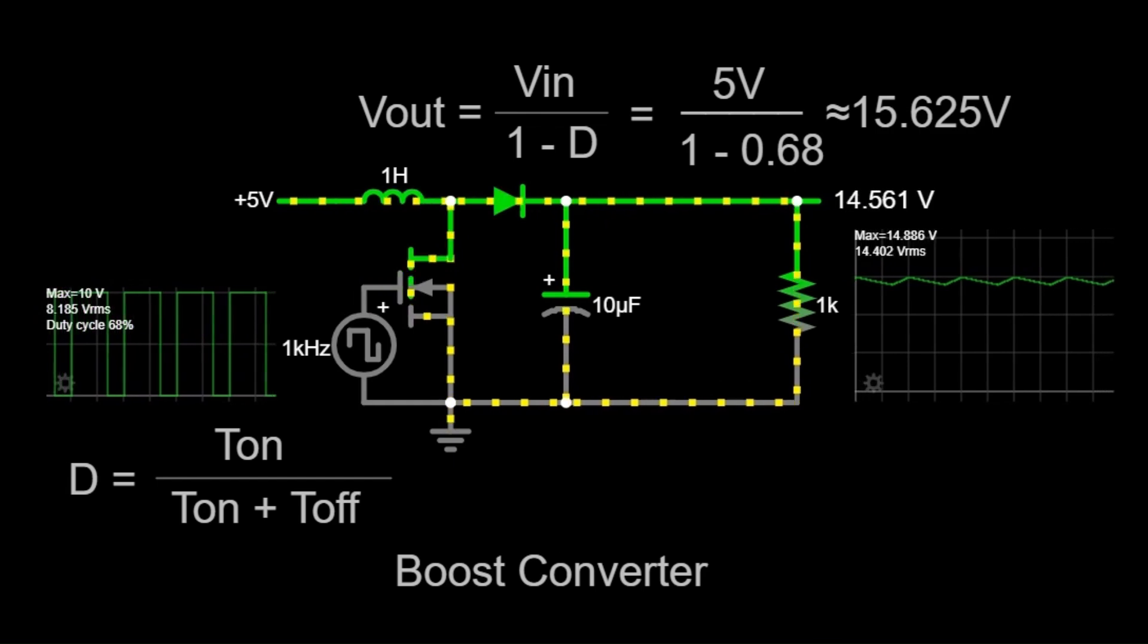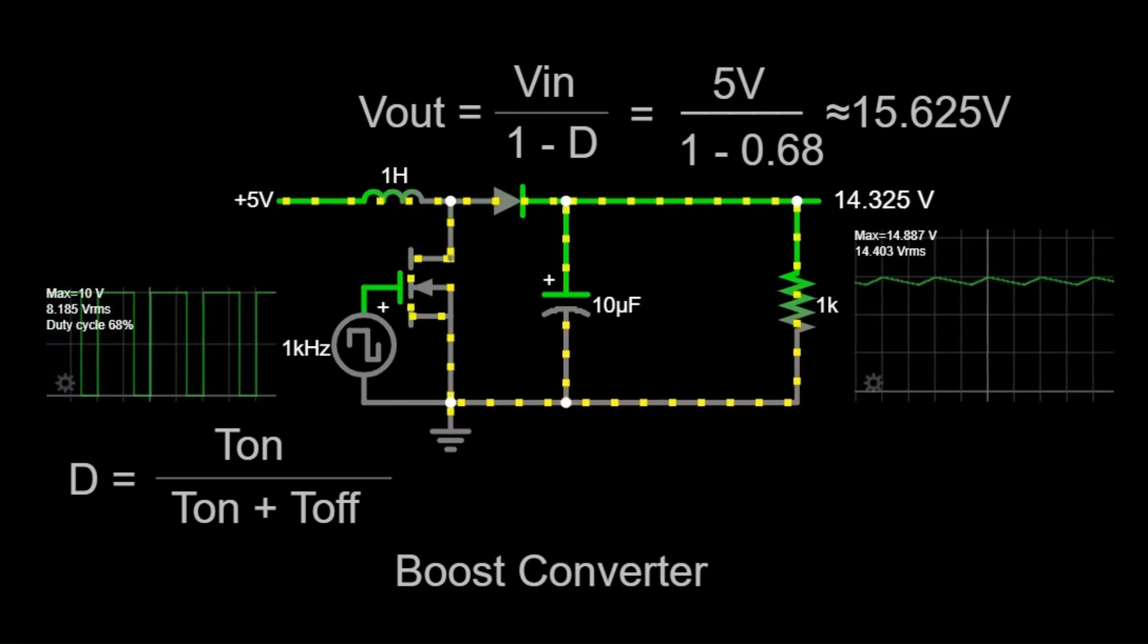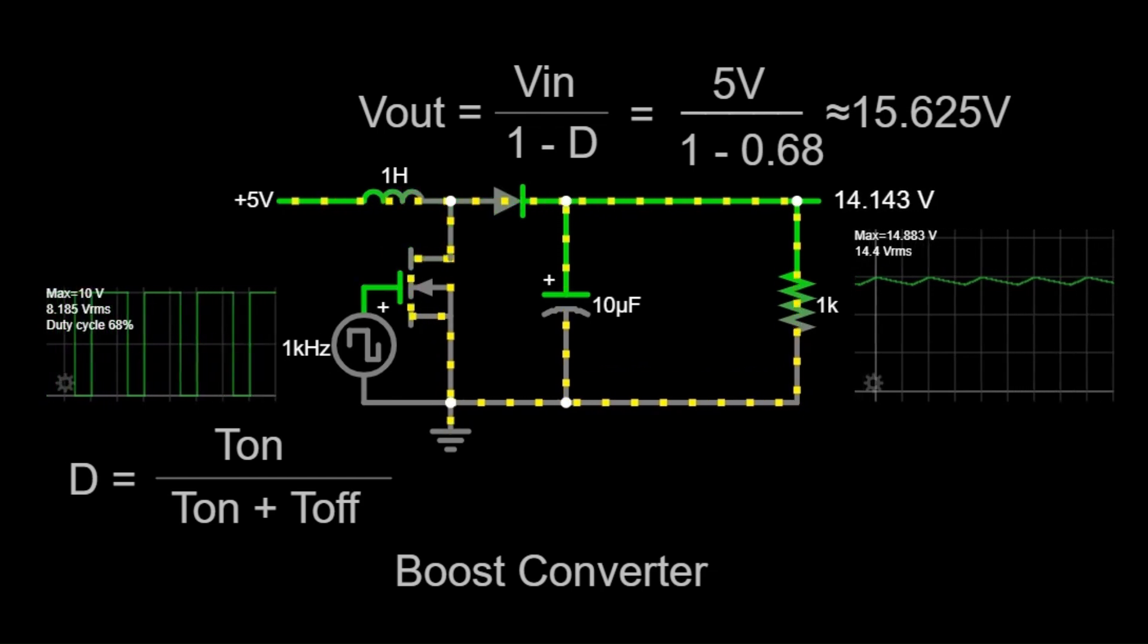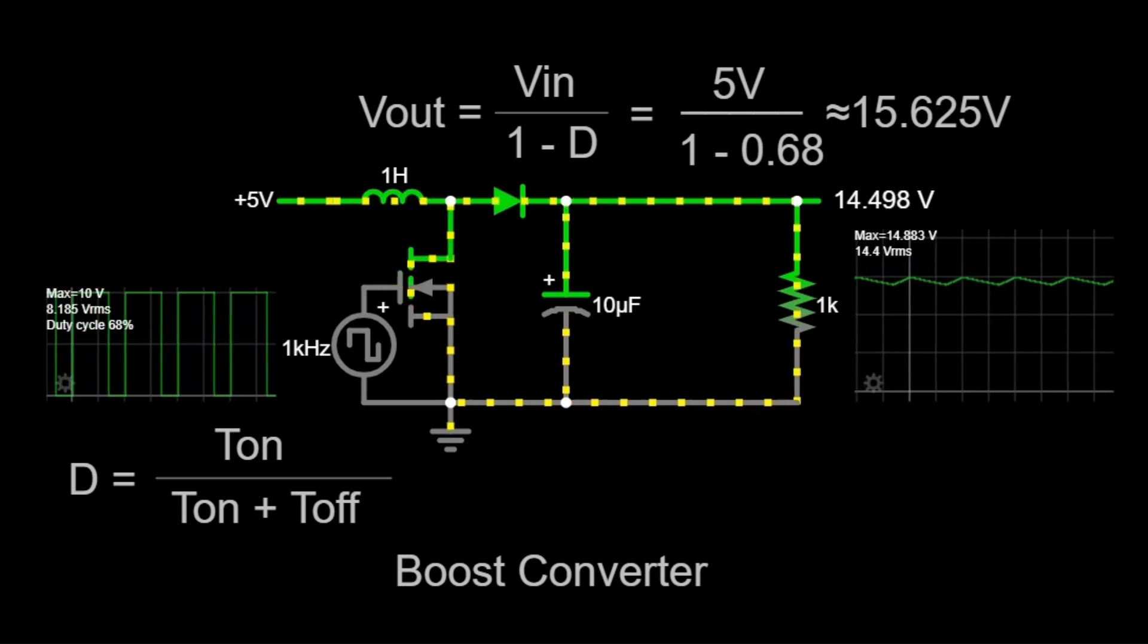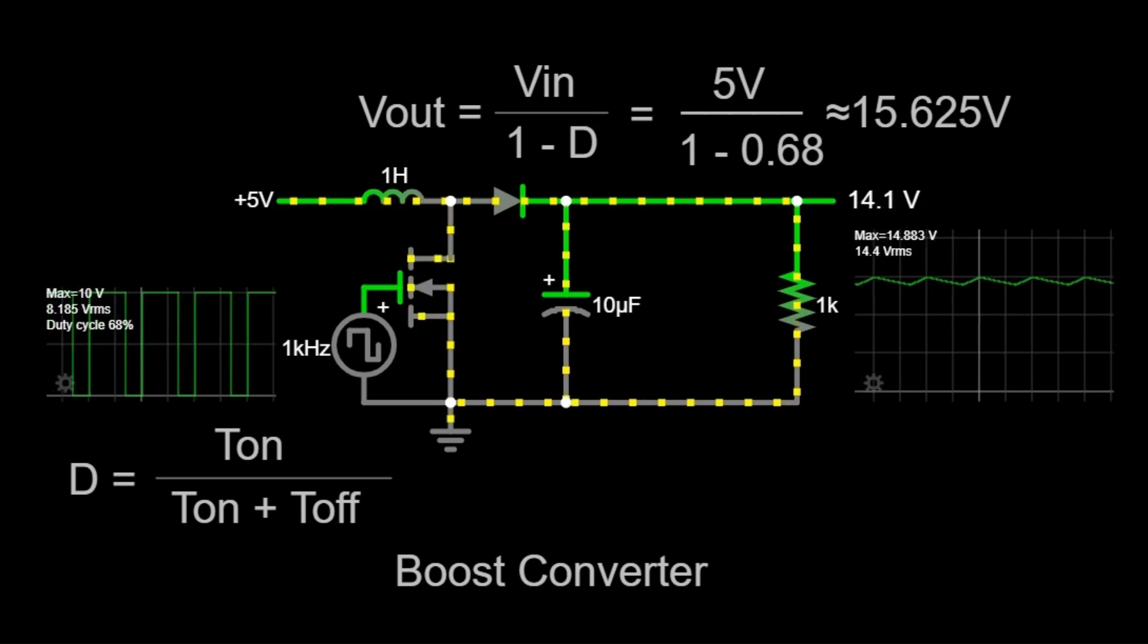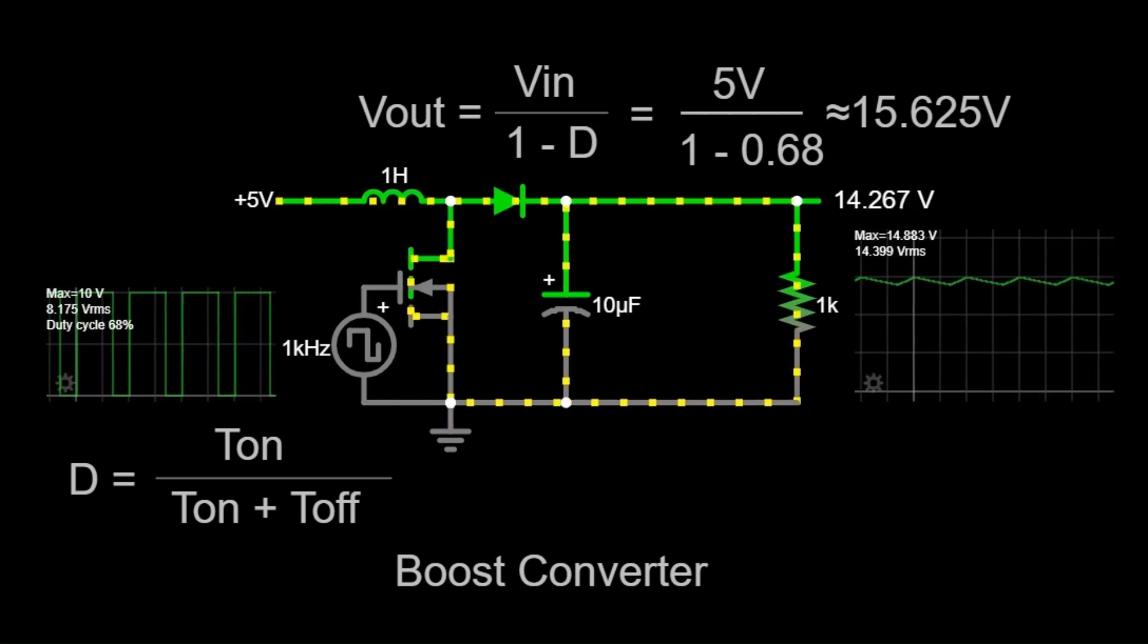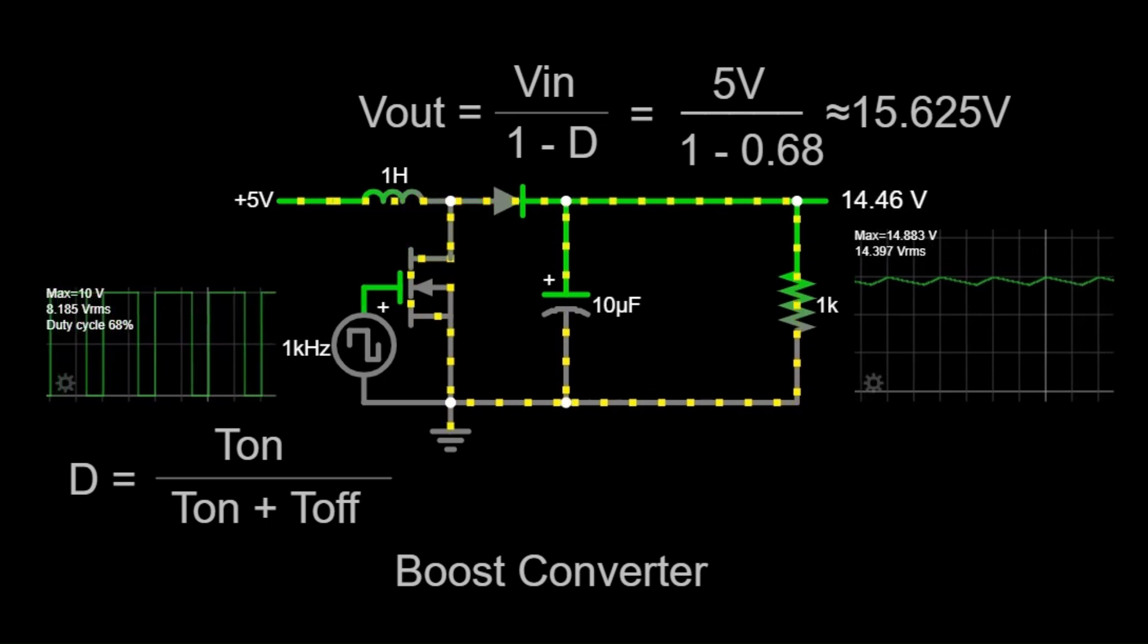Let's move on to the operation of the boost converter. The operation can be divided into two phases: when the switch is closed and when the switch is open. When the switch is closed, current flows through the inductor and energy is stored in the inductor's magnetic field. During this phase, the inductor's voltage increases. This is similar to winding up a spring; the energy is stored in the inductor.